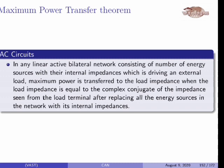Let me explain once more. In any linear active bilateral network consisting of a number of energy sources with their internal impedance — here it comes internal impedance, whereas in DC circuit it becomes internal resistance — which is driving an external load. The load is also an impedance, and the maximum power is transferred to the load impedance when the load impedance is equal to the complex conjugate of the impedance seen from the load terminal. This term is very important: what is the complex conjugate of the impedance seen from the load terminal?